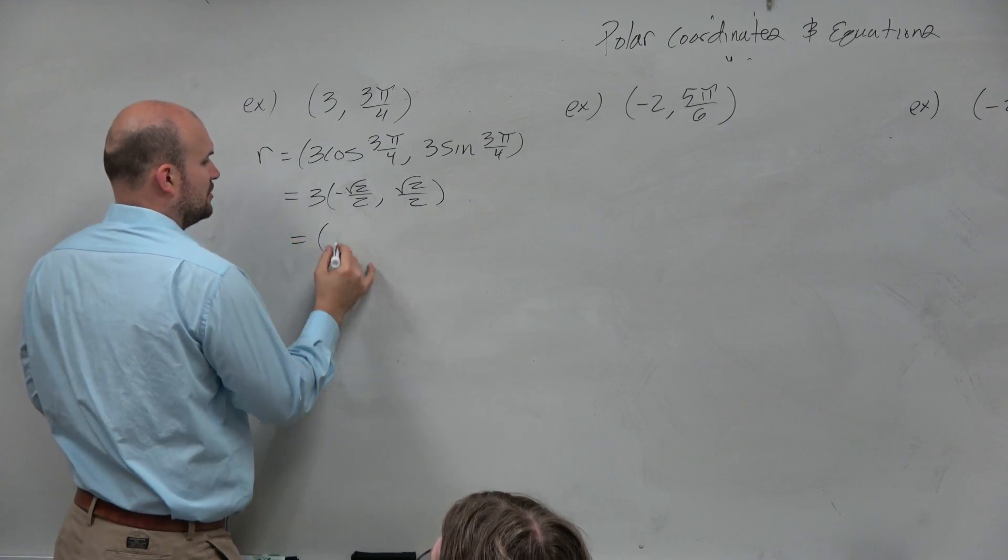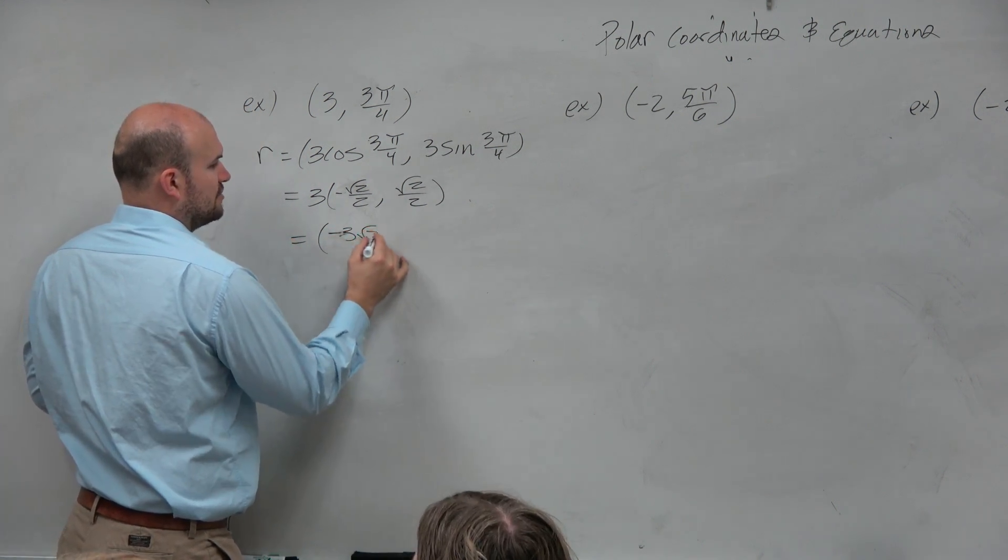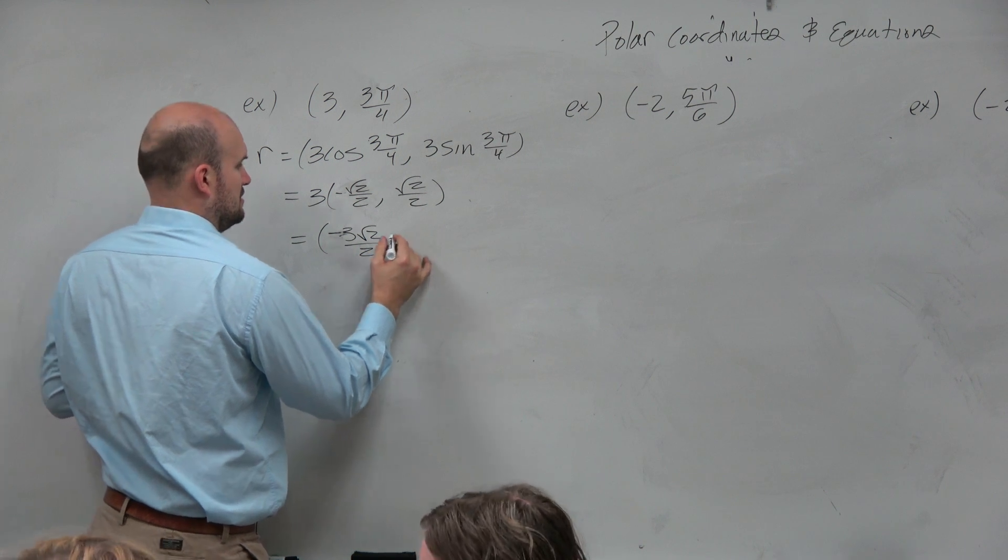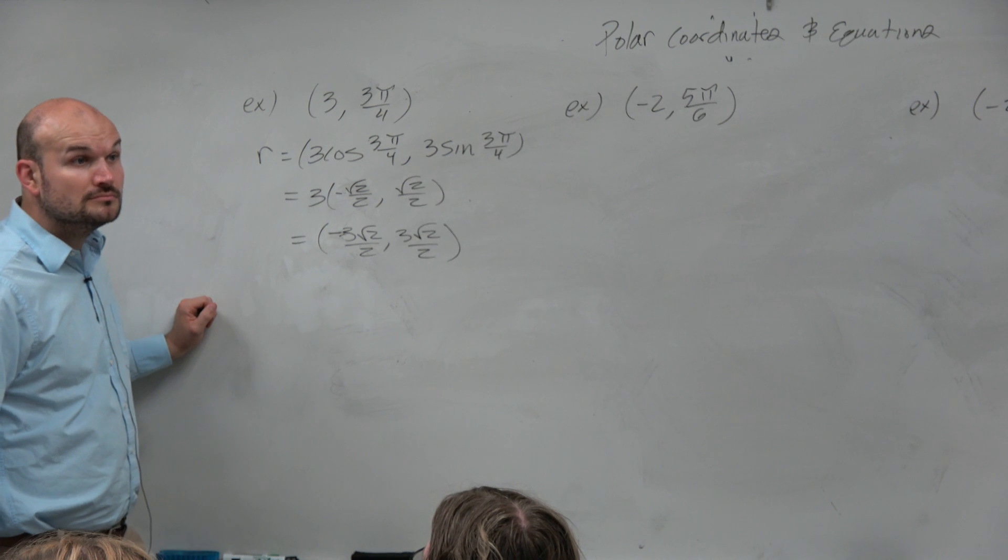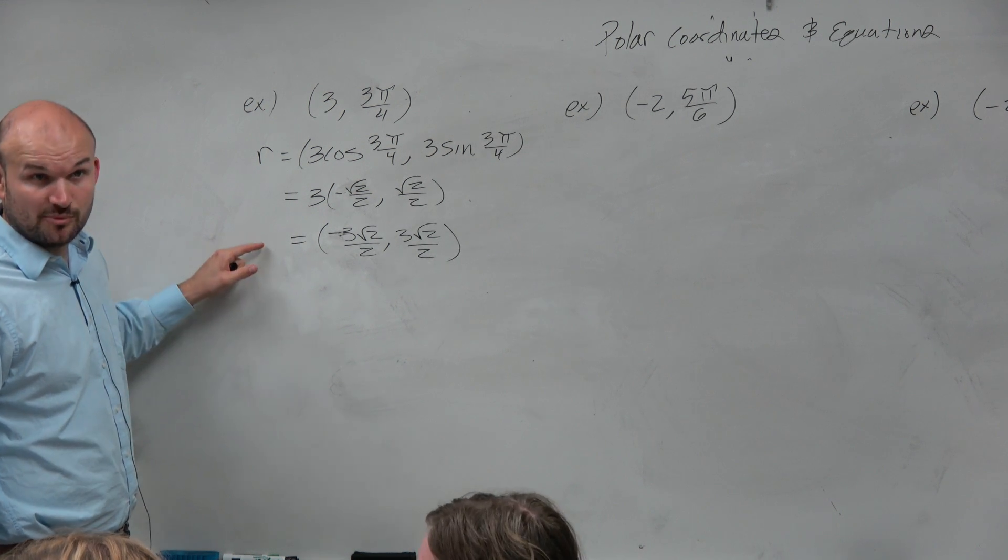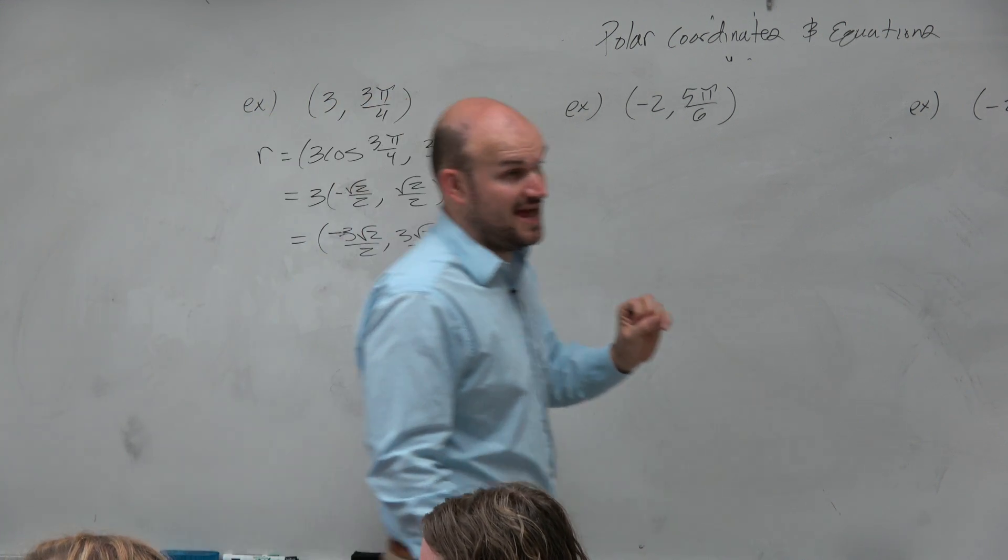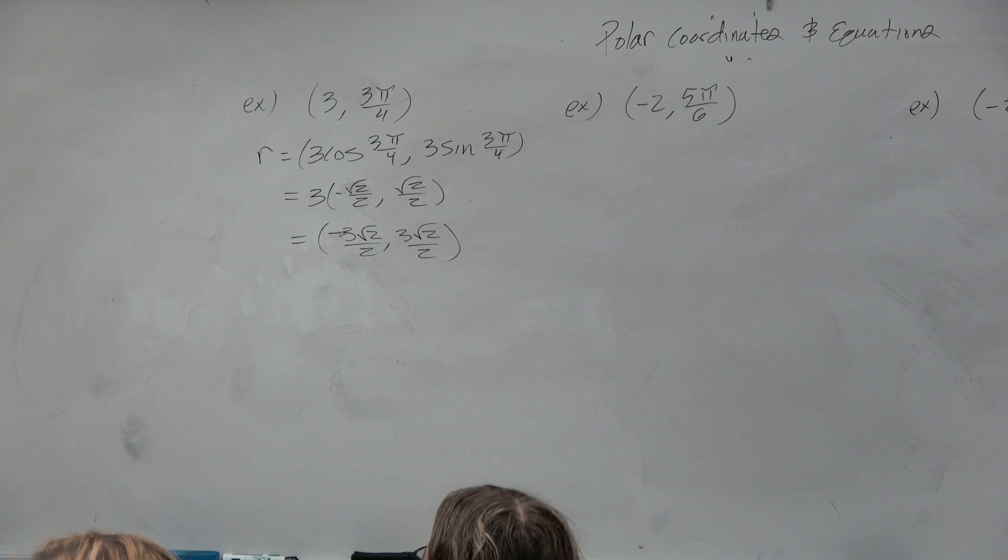So my rectangular point is negative 3 square root of 2 over 2, comma, 3 square root of 2 over 2. Yes, that's the rectangular point. So that's one question I might ask you. I might say, hey, what's the rectangular point? FYI, OK?